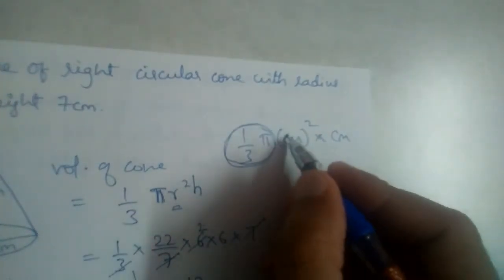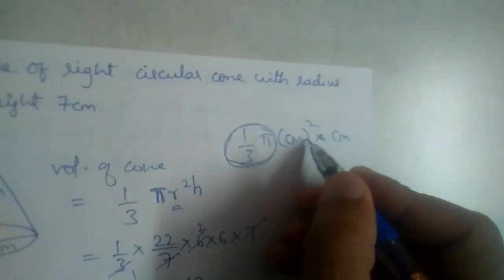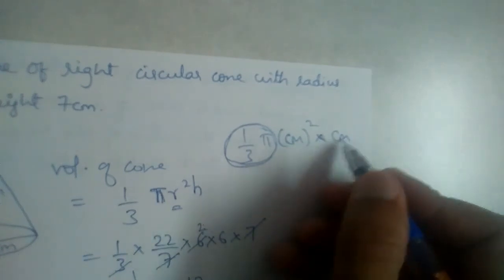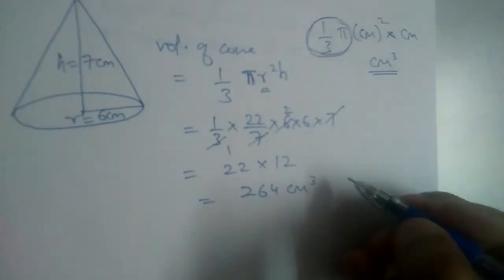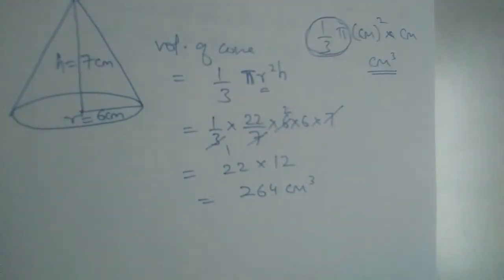So centimeters squared times centimeters equals centimeters cubed. Remember, volume will always be in cubic units, while area will be in square units.